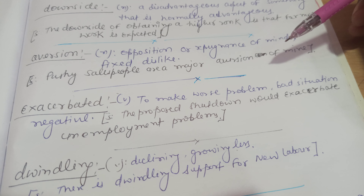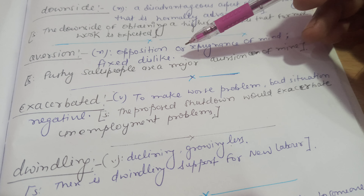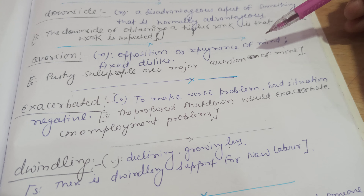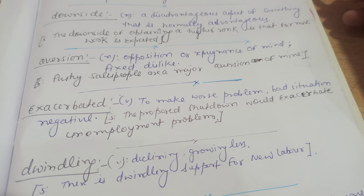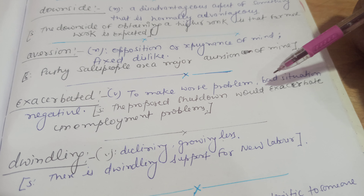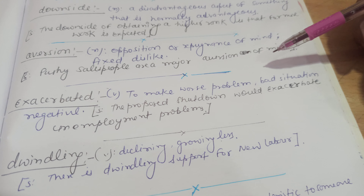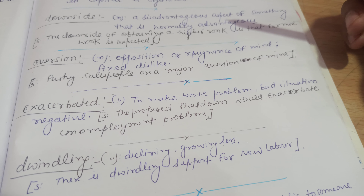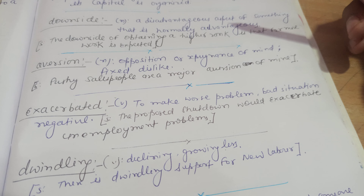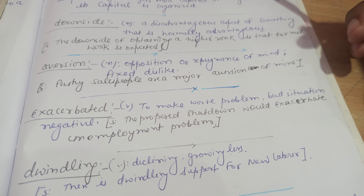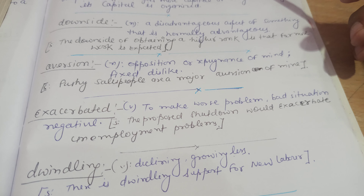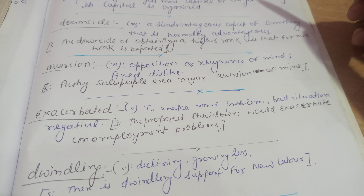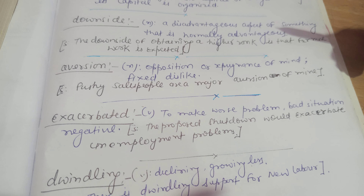Exacerbated. This is a verb and the meaning of this word is to make a problem, bad situation, or negative feeling worse. For example: the proposed shutdown would exacerbate the unemployment problem. Nowadays, due to COVID-19, this is very relevant — there is a downside that to stop the pandemic we have to forego some industrial or commercial activities.